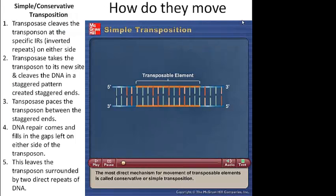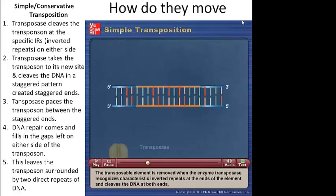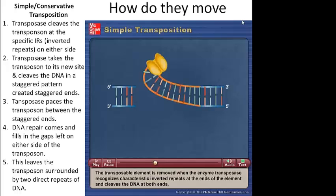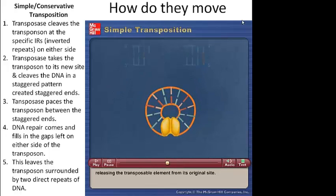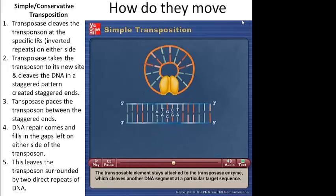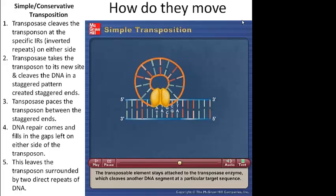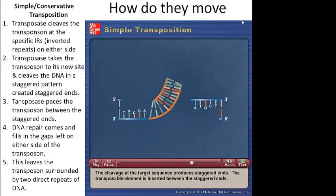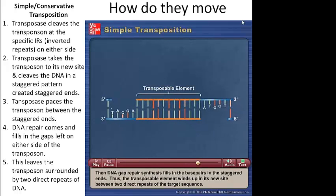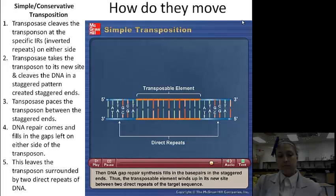The most direct mechanism for movement of transposable elements is called conservative or simple transposition. In this process, the transposable element is removed from its original site and transferred to a new target site. Transposase recognizes characteristic inverted repeats at the ends of the element and cleaves the DNA at both ends, releasing the transposable element. The transposable element stays attached to the transposase enzyme, which cleaves another DNA segment at a particular target sequence, producing staggered ends. The transposable element is inserted between the staggered ends, and DNA gap repair synthesis fills in the base pairs, so the transposable element winds up at its new site between two direct repeats of the target sequence.